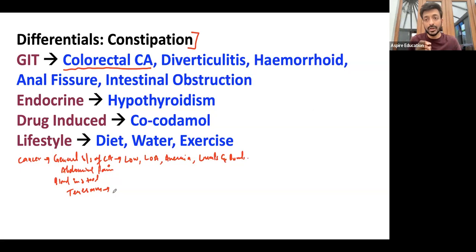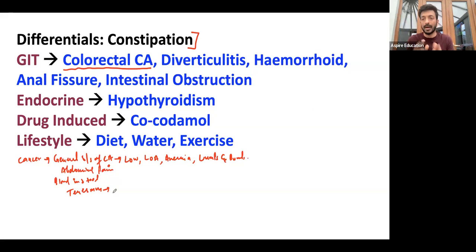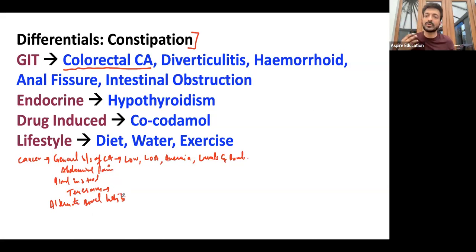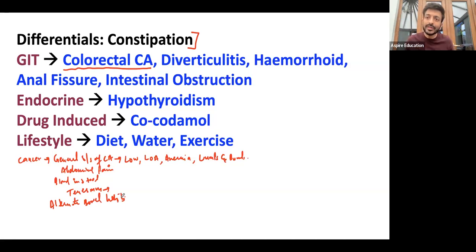Whenever a patient comes with constipation or diarrhea, ask two very important questions: how long have they had it, and what were their bowel habits before? What we're looking for is alternate bowel habits — this is really, really important and could be a sign of malignancy. It's not always malignancy; it could be IBS as well, but alternate bowel habits is a red flag. General cancer symptoms: loss of weight, loss of appetite, anemia symptoms, lumps and bumps, abdominal pain, blood in stool, tenesmus, and alternate bowel habits.